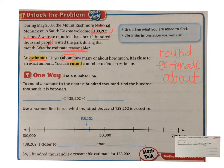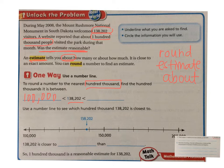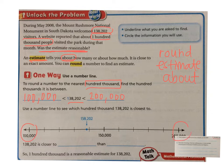One way we can round is by using a number line. To use a number line, we have to think about — we're rounding to the nearest hundred thousand — we have to find the hundred thousands our number is between. The exact number is 138,202, so the hundred thousand that is less than that is 100,000, and the hundred thousand that is above it but closest is 200,000. So 138,202 is going to be somewhere between 100,000 and 200,000, and we can use a number line to see which it is closest to.